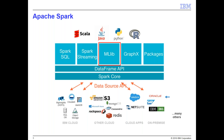Spark itself is not a data store — it's a processing engine that can connect to any data store to retrieve data. That data could be on-prem, in the cloud, in a relational database, in object storage, or whatever you want to connect to. You read it into your Spark processing environment and analyze it from there.